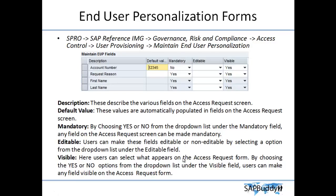The end user personalization form configuration is done in SPRO: go to SPRO IMG, Governance Risk and Compliance, Access Control, User Provisioning, and Maintain End User Personalization. We can create any number of EUPs to use in different stages. In the EUP field you can see a description of each field — all fields possibly required in an access request are already defined here. For example, account number comes from the logon data field.